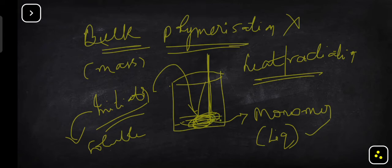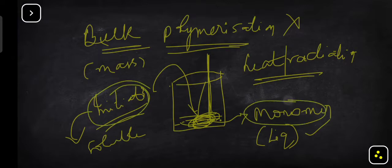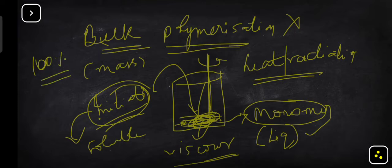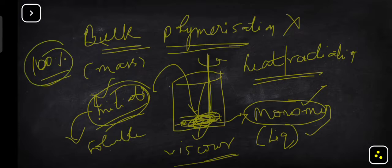As the reaction proceeds between the initiator and monomer, the reaction mixture becomes more viscous. Whenever the viscosity of the reaction mixture increases, you find it difficult to stir. In this process, the polymer you get will be 100% pure, because you are not adding any solvent or additives — just the monomer and the initiator.